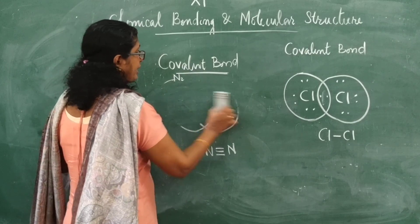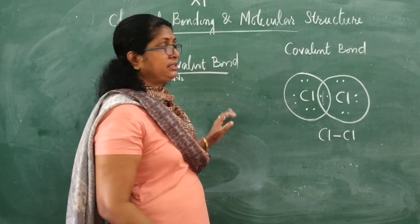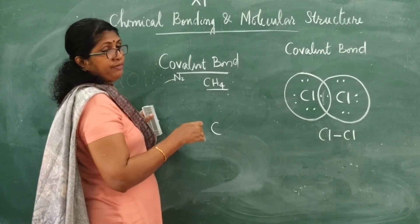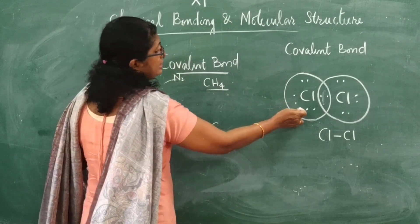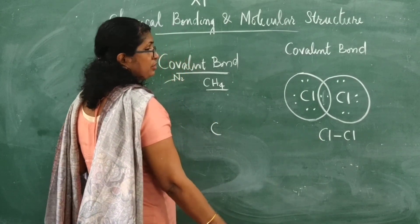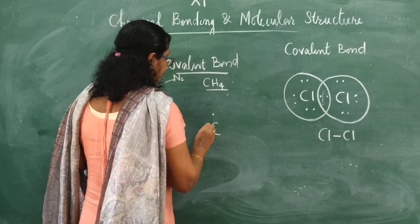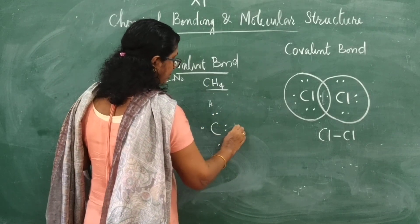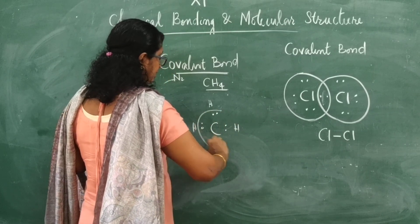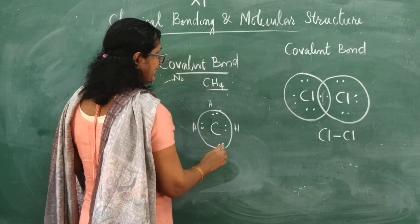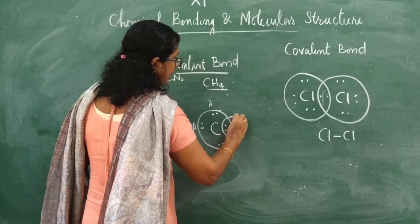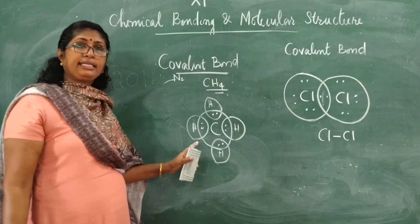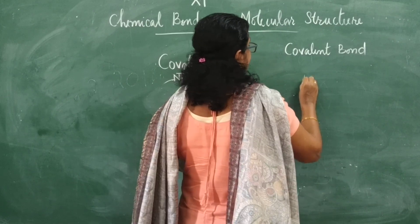This is how a covalent bond is formed by sharing of electron pairs. Now take methane — a heteronuclear molecule, made up of different types of atoms, unlike homonuclear molecules made of a single type. In methane, each hydrogen has one electron. Carbon shares one electron each with four hydrogen atoms, getting four pairs of electrons. Each hydrogen is satisfied, giving us the CH₄ molecule. Similarly, ammonia is formed by covalent bonding.